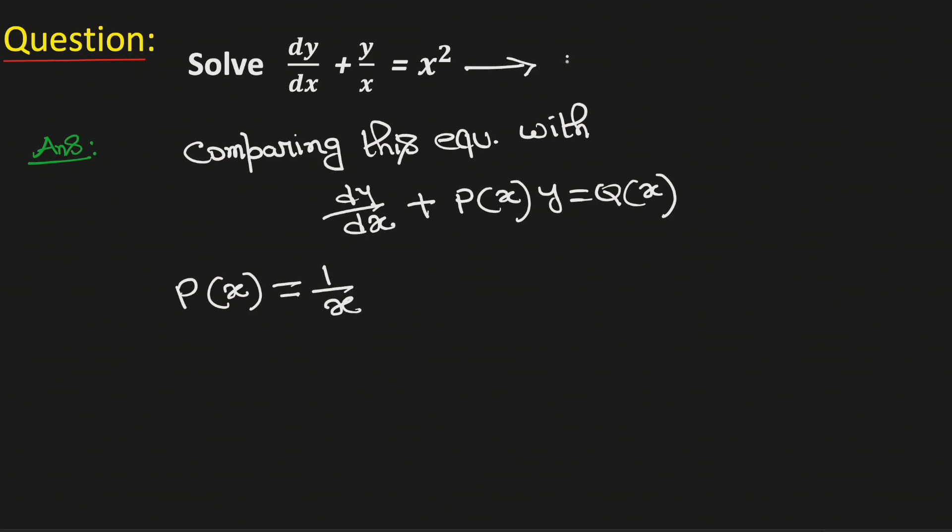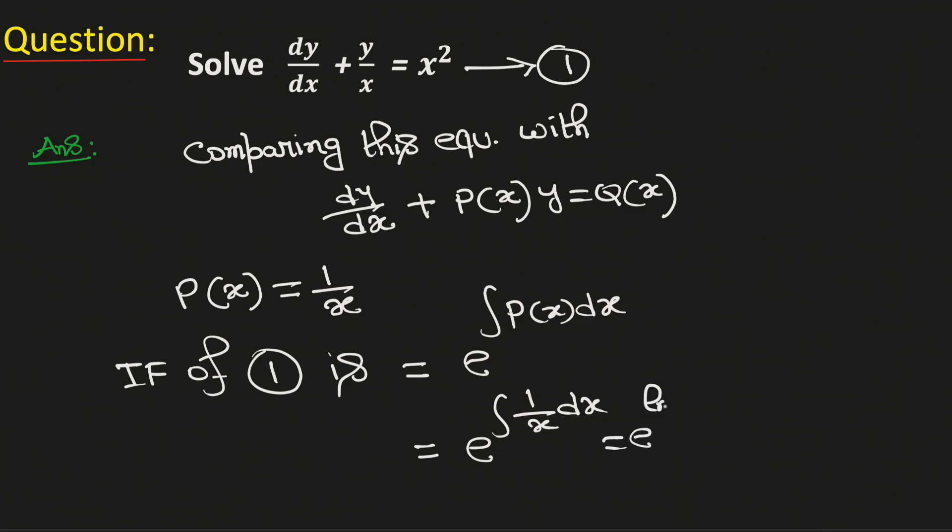Now name the given equation as equation number 1. Note that the integrating factor of 1 is equal to e to the power integration of P(x)dx. So the integrating factor will be equal to e to the power integral of 1 over x, which is same as e to the power ln(x), which is again same as x.